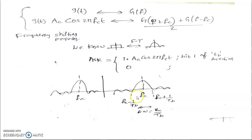The bandwidth is the difference between the maximum frequency and the minimum frequency. The maximum frequency is fc + 1/Tb and the minimum frequency is fc − 1/Tb. So bandwidth = (fc + 1/Tb) − (fc − 1/Tb) = 2/Tb. The fc terms cancel, giving a bandwidth of 2/Tb. This means the channel must have a bandwidth of 2/Tb to transmit the ASK signal. Thank you.